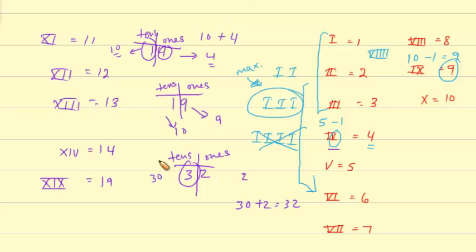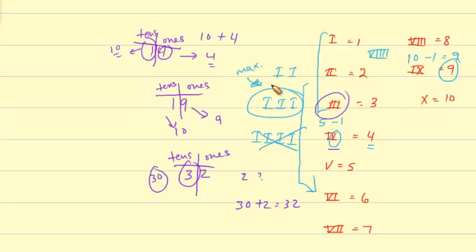So what we can do here is first we have to figure out how to write 30 in Roman numerals, and then we have to figure out how to write 2 in Roman numerals. So 30, similar to this right here. 30 would be written as XXX. That would be 30. And then what about 2? We just look right over here. II. So this would be 32.